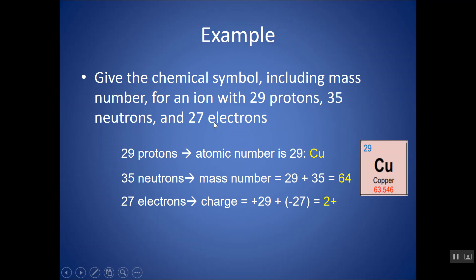To write the symbol, put the element symbol Cu. The mass number goes in the top left-hand corner — that's 64. If you want, you could put the atomic number, 29, in the bottom left-hand corner. And you put the charge in the top right-hand corner: 2 plus. Typically I'll put the number and then the charge — so 2 plus rather than plus 2 — but either is fine.